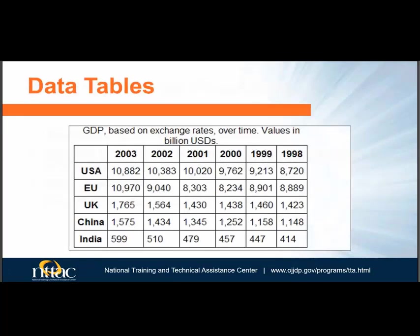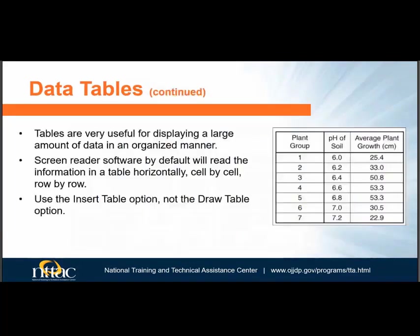Let's begin with data tables. Data tables can be made accessible to blind people, but there are a few things that need to be done in the PowerPoint file. Note that it will need to be tweaked in the PDF file once converted. When working with tables in PowerPoint, you must ensure the table will be ready to be made accessible when converted to a PDF. Note that if you use the Draw Table option, it may not convert to an accessible table in PDF, so avoid using that option.